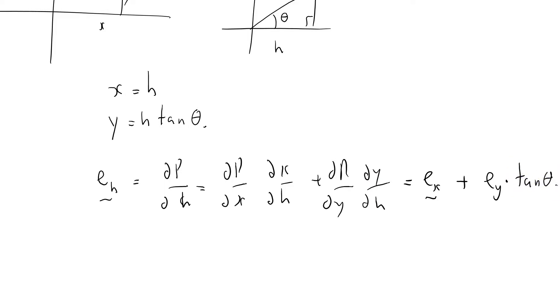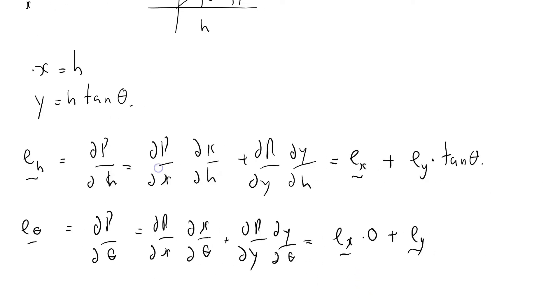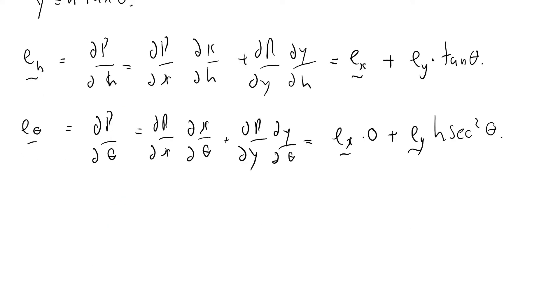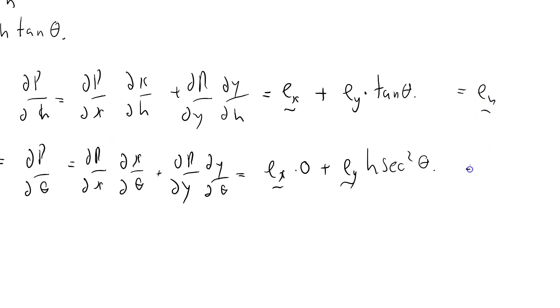And e_theta equals (∂ρ/∂x)(∂x/∂θ) + (∂ρ/∂y)(∂y/∂θ) = e_x times dx/dθ, which from here is zero, plus dρ/dy is e_y, and dy/dθ is just h sec²θ. So I've got these nice little pair of relations, and that equals e_h and that equals e_theta.